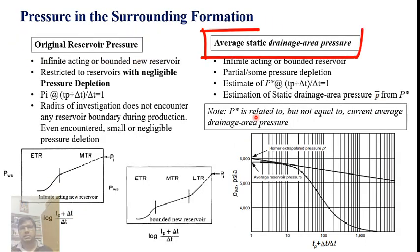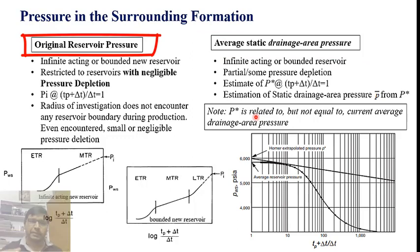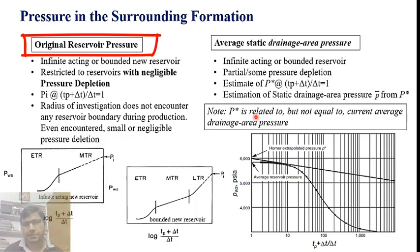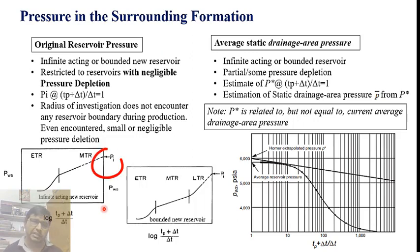So there is the original reservoir pressure and there is the average static drainage area pressure. Original reservoir pressure applies when there is no boundary, or when the reservoir is bounded but new with negligible pressure depletion. This is only where, if you extrapolate the middle time region on the Horner plot, log of (1 + delta-t) approaches 1 — meaning the well is shut in long enough so the transient has sufficiently reached far into the reservoir, and this is where the initial reservoir pressure is obtained.